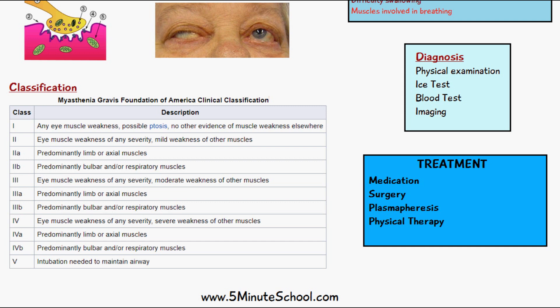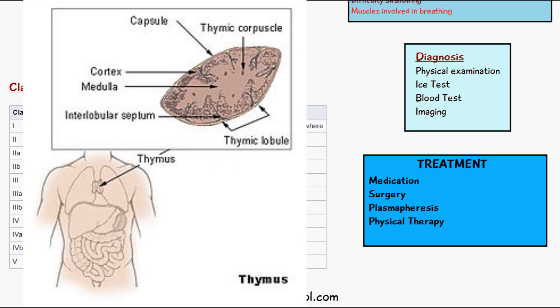Surgery can also be done in cases where the patient has a tumor or excessive enlargement of the thymus. In myasthenia gravis there is hyperplasia of the thymus and cancerous tissue may develop. Surgery called a thymectomy is performed when a thymoma is present, though it is not particularly beneficial for relieving the symptoms of myasthenia gravis directly.